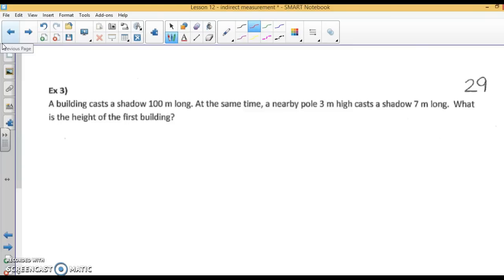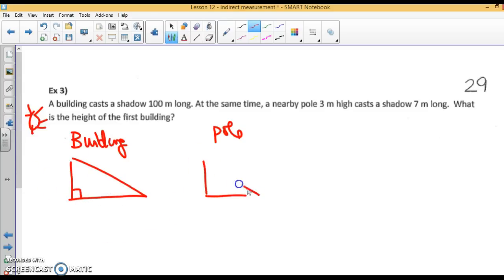A building casts a shadow 100 meters long. At the same time, a nearby pole that is 30 meters high casts a shadow 7 meters long. What is the height of the building? You've got a building and a pole. Here's our sun. Here's your building, here's your pole. Our building casts a shadow 100 meters long, so the shadow is on the ground. At the same time, a nearby pole that is 30 meters high casts a shadow 7 meters long.